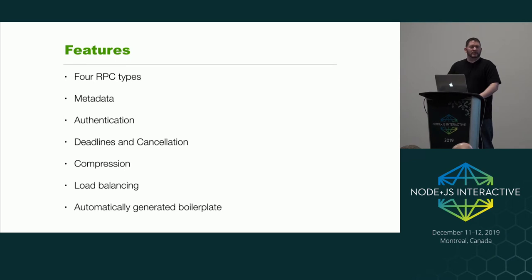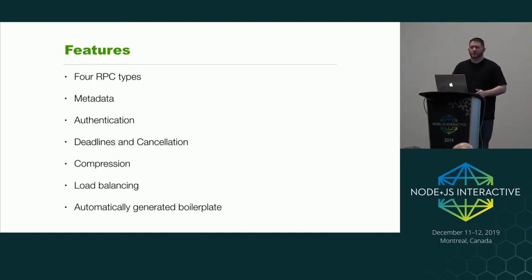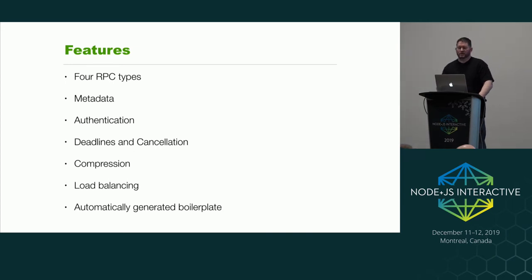One of the really nice things built in that I haven't seen in other HTTP frameworks is load balancing. It has a built-in load balancer in the client where you can give it a list of servers, and it will balance between those when sending requests. It can also do automatically generated boilerplate — it can generate documentation and generate a client for you so you don't have to use gRPC directly.